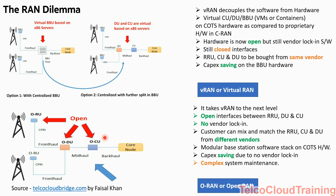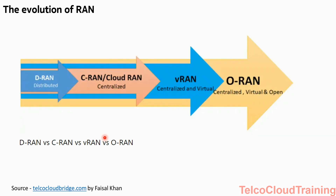This is the evolution of RAN: it started from DRAN since the time of 2G and 3G, moved to Centralized RAN (CRAN), then VRAN in LTE, and Open RAN going forward into 5G. The source of this information is telcocloudbridge.com by Faisal Khan. Remember that cloudification and virtualization start from the later two stages — VRAN and ORAN. In DRAN and CRAN there was nothing virtualized. VRAN is centralized and virtual; ORAN is centralized, virtual, and open.